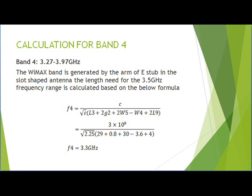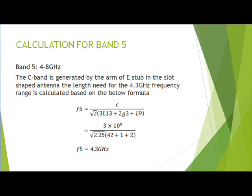For frequency band creation, the basic formula for creating the frequency for the slot antenna uses the epsilon value calculated from the substrate. The operating frequencies F1 and F2 are calculated, and then the design calculations for the five bands of frequency are carried out as shown below.